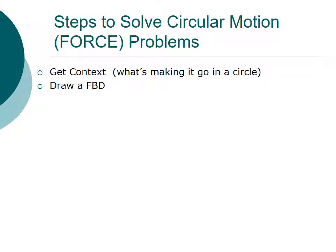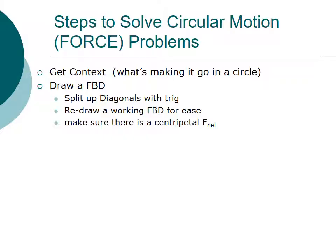Next, we draw a free body diagram. There are several parts to that, though. More specifically, if there are any diagonal forces, we want to split those up by using trigonometry. We'll want to redraw the free body diagram into a working free body diagram just for ease of solving. And then we'll want to make sure that whatever the forces that we came up with, it does make sense in the sense that there is still a centripetal net force pointing towards the center of the circle. If not, we've either forgotten a force or made up a force that's not really there.